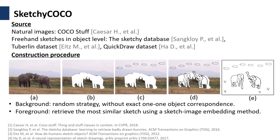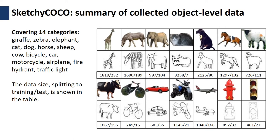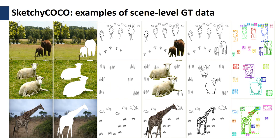To evaluate our idea, we build a composite dataset called SketchICACO, based on the COCO STUFF dataset and several sketch datasets. According to the different characteristics of foreground and background, we adopt different construction procedures. For a foreground object in an image from COCO STUFF, we align the most similar sketch retrieved using a sketch-image embedding method to it. For background regions, we place sketches at random positions without exact one-to-one object correspondence. At object level, we build a sketch-image pair dataset covering 14 classes in total. Here we show several examples of scene-level ground truth data from SketchICACO, which include four groups.